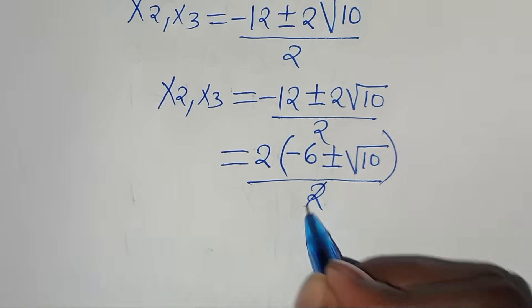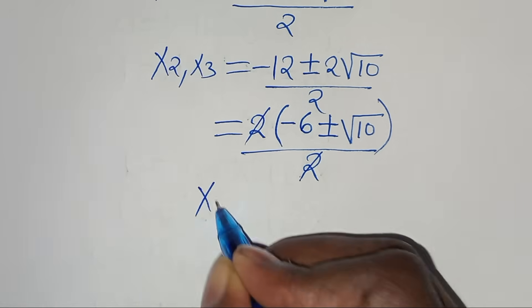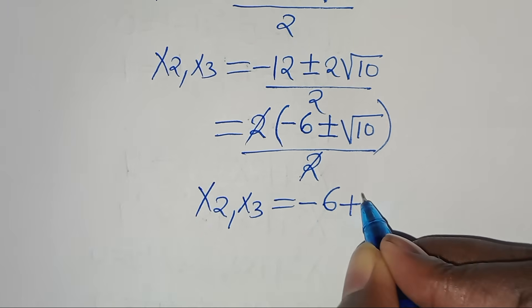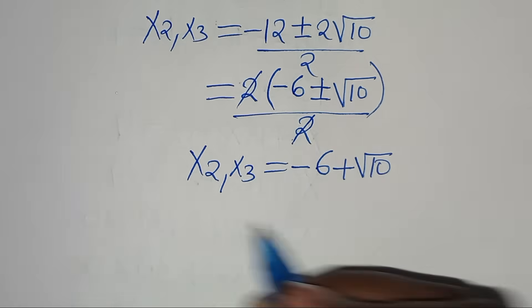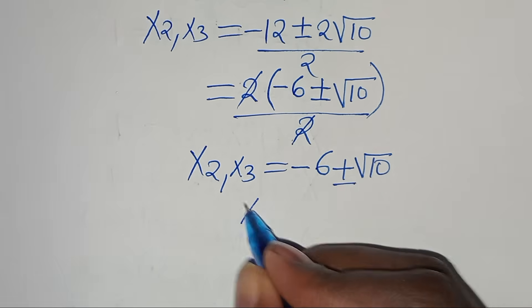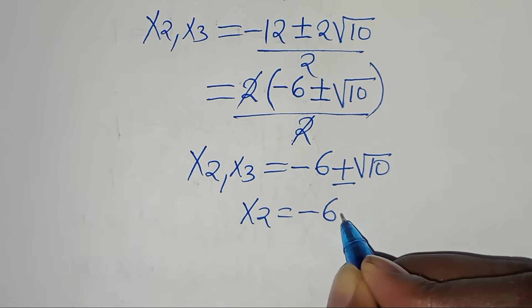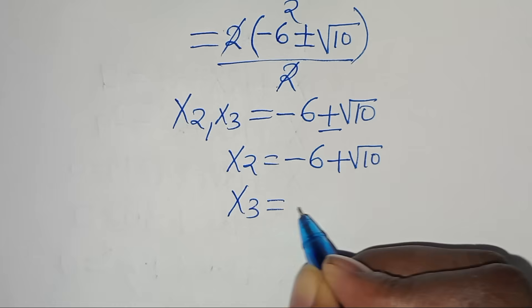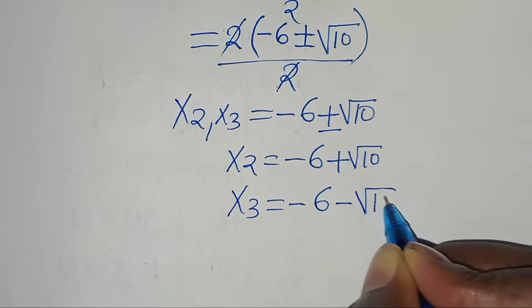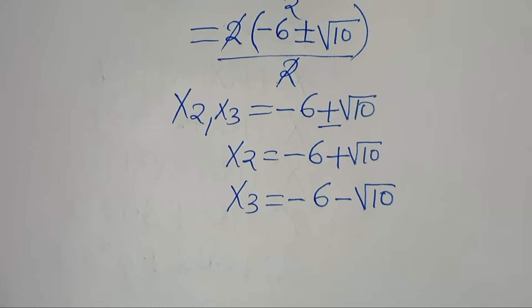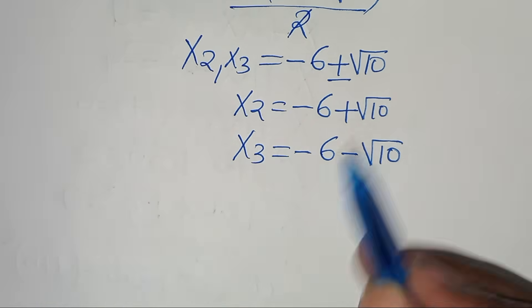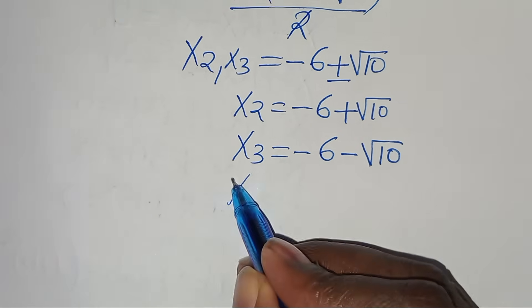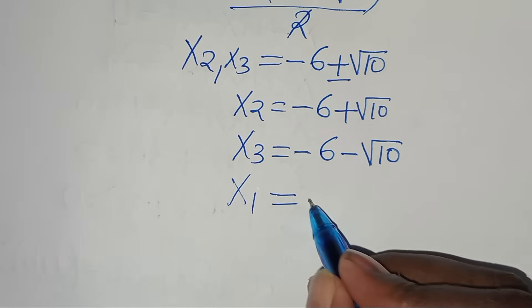Factoring 2 from the numerator: 2(−6 ± √10) / 2. The 2s cancel, giving x₂, x₃ = −6 ± √10. So our three solutions are: x₁ = −6, x₂ = −6 + √10, and x₃ = −6 − √10.